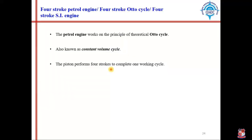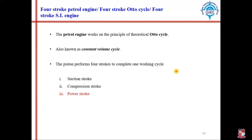A stroke is basically the movement of the piston from one extreme position to another extreme position. The Otto cycle consists of 4 processes: the first is the suction stroke, second is the compression stroke, third is the power stroke, and fourth is the exhaust stroke.